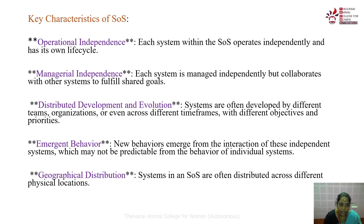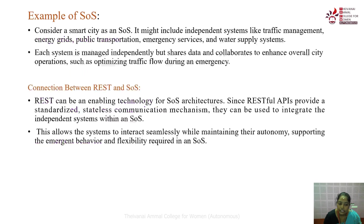Characteristics of a System of Systems (SOS): first, operational independence — systems within the SOS operate independently and each have their own lifecycle. Second, managerial independence — systems are managed independently but collaborate with other systems to fulfill shared goals. Third, distributed development and evolution — systems are often developed by different teams, organizations, or across different time frames with different objectives and priorities. Fourth, emergent behavior — new behaviors emerge from the interaction of independent systems, which may not be predictable from individual systems. Fifth, geographical distribution — systems in an SOS are often distributed across different physical locations.